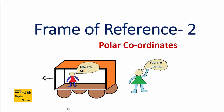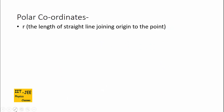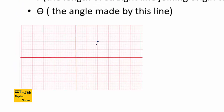Hello friends. In this video we will discuss polar coordinates and their conversion to Cartesian coordinates. Polar coordinates are represented by a pair of coordinates: r and theta. R is the length of the straight line joining the origin to the point, and theta is the angle made by this line. The position of a point in polar coordinates would be written as r, theta.